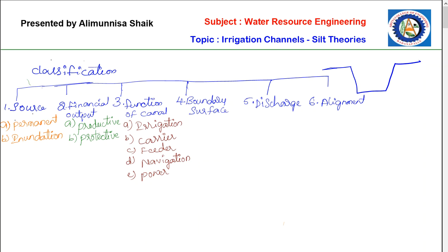Navigation canals provide transportation from one point to another by means of water. Power canals are used for the generation of electricity. The water coming through power canals is generally used for power or electricity generation — that is why they are called power canals.